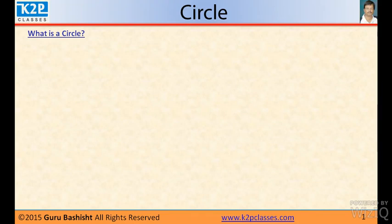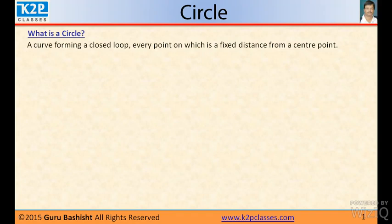Circle is the path of a point or locus of a point which moves in such a way that a distance from a fixed point is always a constant, and that distance is called radius. Or in another word, a curve forming a closed loop every point on which is a fixed distance from a center point.